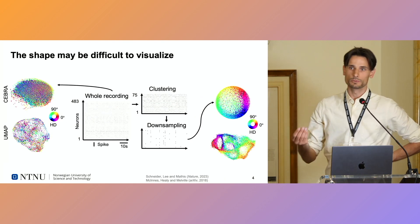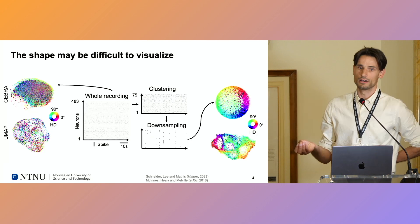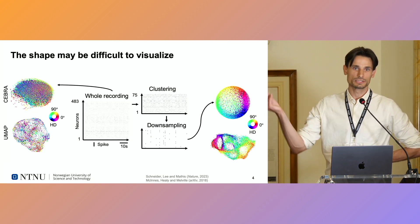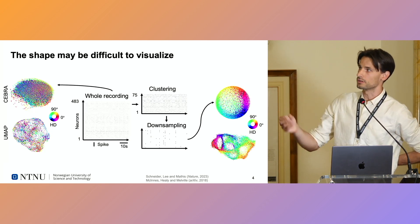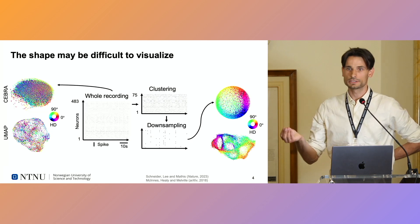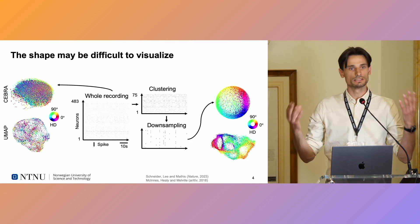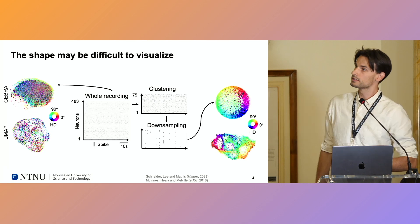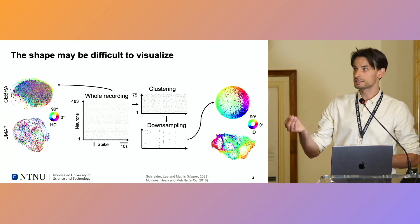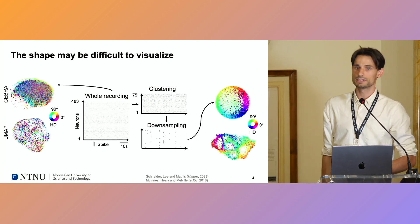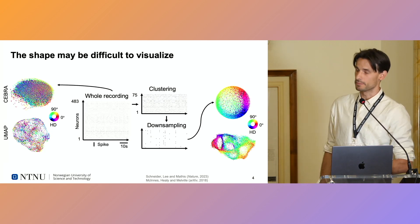However, if we try to visualize the shape of this data through dimensionality reduction, we can easily struggle. First of all, neural recordings are usually noisy, and we have a lot of different kinds of cells in our data. But even if we find the right cells and the relevant time points, it is still hard to really say what the shape is.